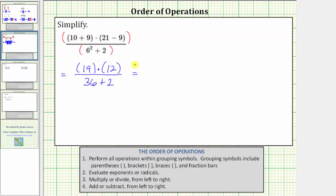And now going back up to the numerator, we determine the product of 19 and 12. 19 times 12 equals 228, and therefore the numerator simplifies to 228.